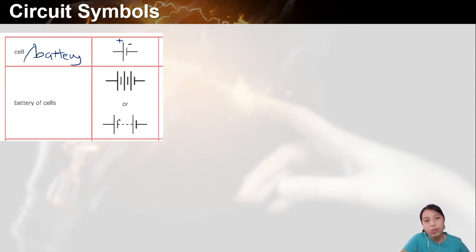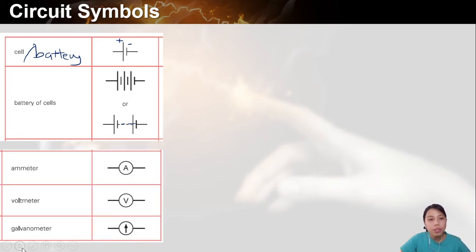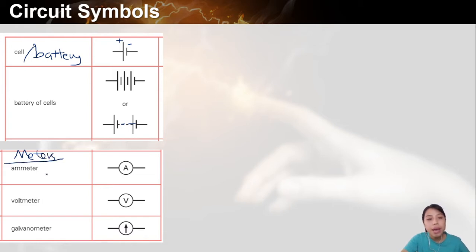Sometimes they're lazy to draw too many batteries, so they just draw dot dot dot. Anyway, that's some of the ones to start with. There are other things — these are all the meters that you use to measure some things.